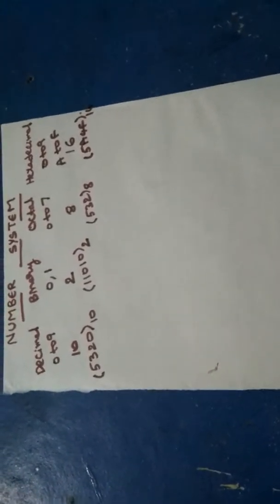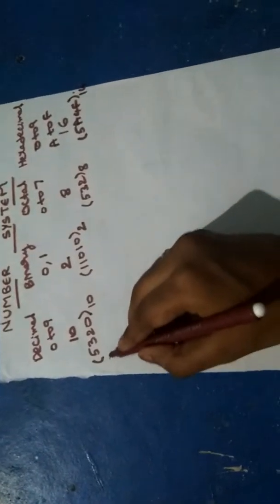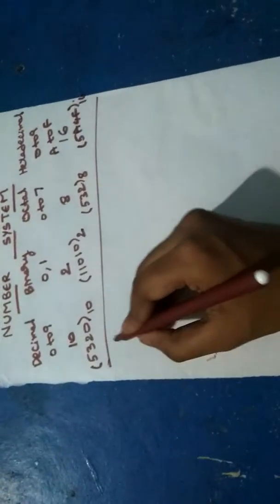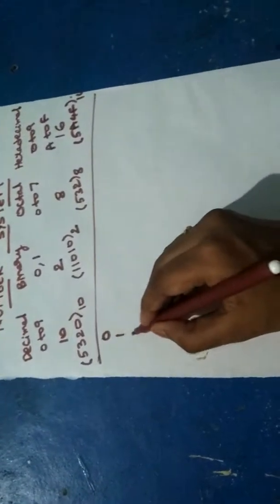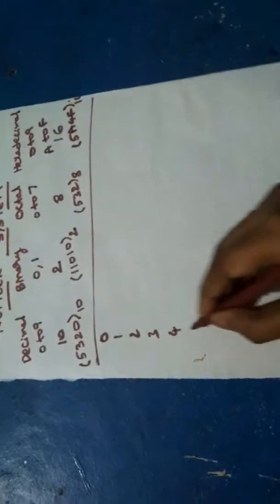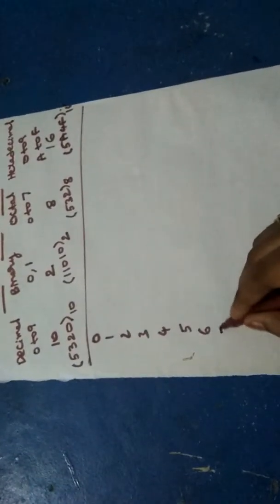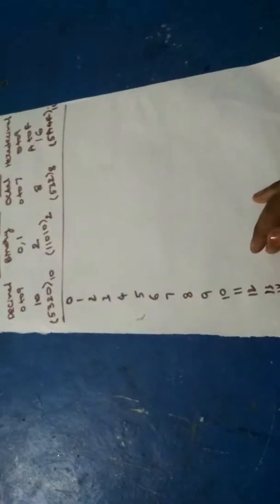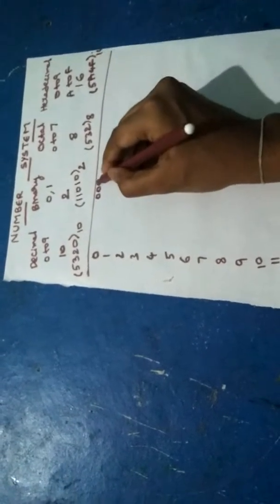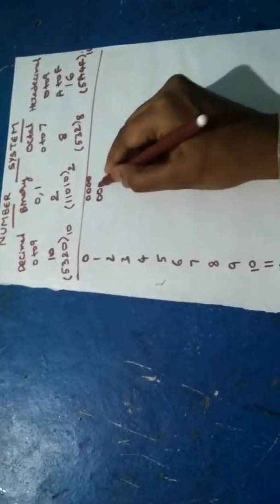Now we will see from 0 to 15 in all the number systems. In decimal number system, 0 to 15 are same as our normal number system. For binary we should write 4-bit binary: 0 means four zeros, 1 means 0001, 2 means 0010.